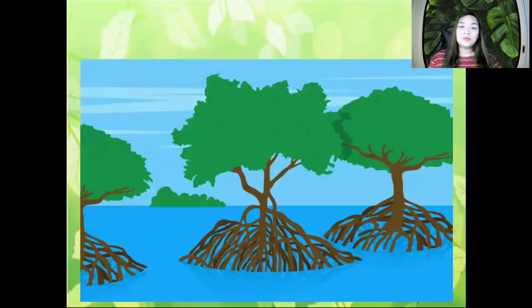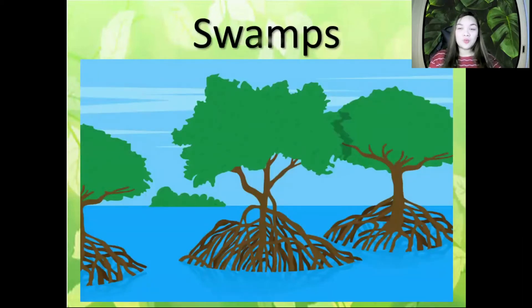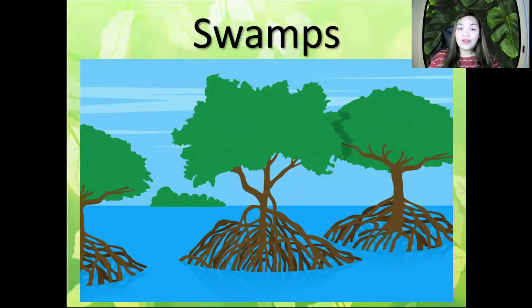Next one, we have Swamps. Everybody say Swamps. What is the spelling of Swamps? Let's spell it together: S-W-A-M-P-S. Swamps. That's right.